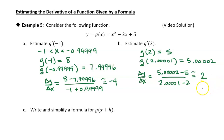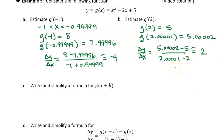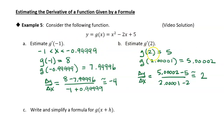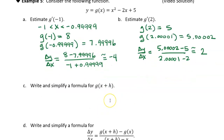So I've estimated the value of the derivative at two points. I could keep going, create a table of values, graph it, and have the derivative function given numerically. But I want to do something more interesting. Notice that for g of 2, I just added a very small amount — 0.00001. So I want to find a general equation: g at x plus a very small amount h, where h is a very small number.